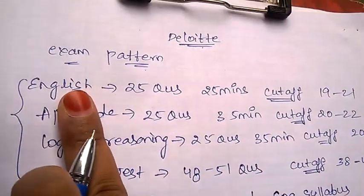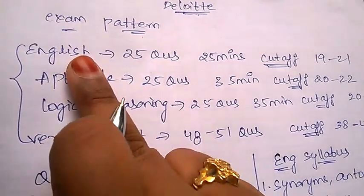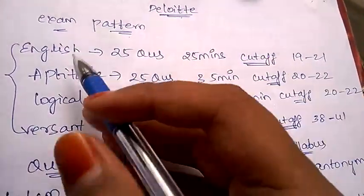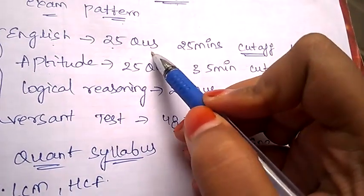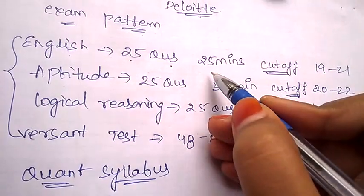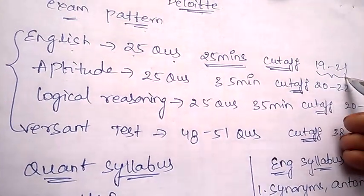First one is English, also called as verbal. Under English there will be 25 questions asked, and for 25 questions they will be giving you 25 minutes. The cutoff will be in between 19 to 21 depending upon the performance of students and the competition.